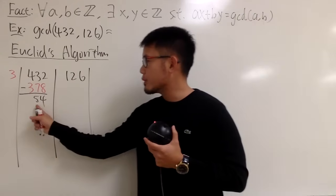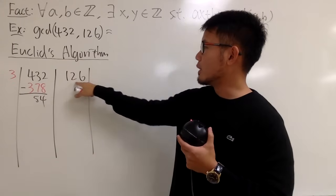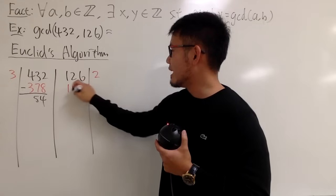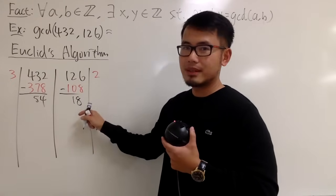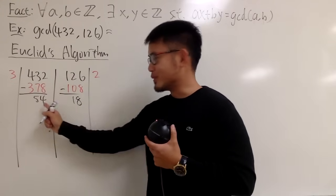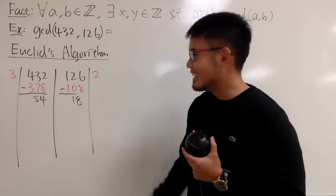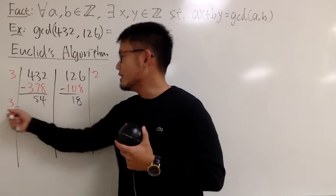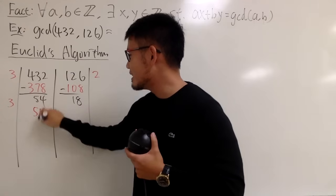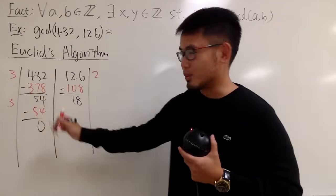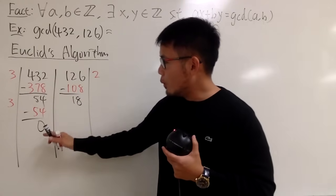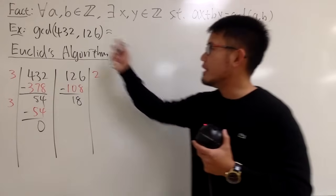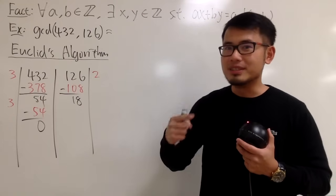Now I use 54 and divide into 126. How many times does 54 go into 126? You get 2. 2 times 54 is 108, and subtracting gives 18. Then, 18 goes into 54 exactly 3 times — 3 times 18 is exactly 54 — and we get 0. Once we reach 0, we're done. The algorithm always reaches 0 because 1 is always a common factor, so the worst case is GCD equals 1.